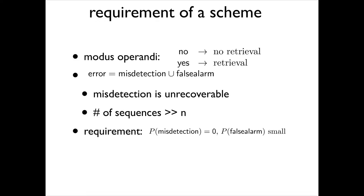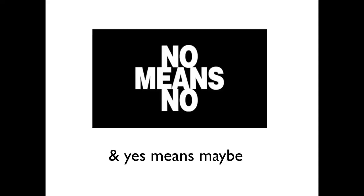For biological databases that motivated our work, misdetection was intolerable. If you allow even a small probability of misdetection per sequence, when the database has a ginormous number of sequences, even a small per-sequence probability translates to essentially probability one that you will be misdetecting some sequence. So our requirement is no misdetection. Subject to that, we want small probability of false alarm — which means only a modest additional burden of retrieving some sequences in vain. The slogan: no means no, and yes means maybe.